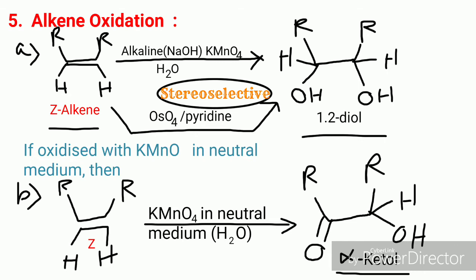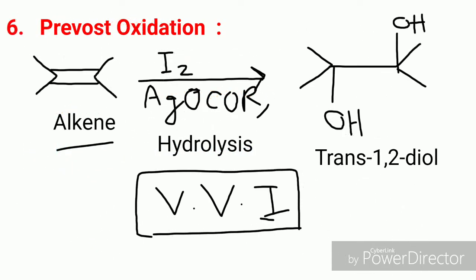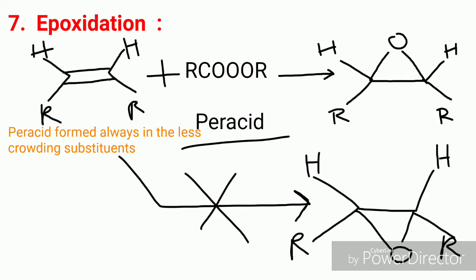Next is Prevost oxidation. Here, alkene is converted to the corresponding trans-1,2-diol. Remember, in the previous case, alkene was converted to cis-1,2-diol by alkaline KMnO₄. Here, alkene is converted to trans-1,2-diol by I₂ and AgOCOR — this is the specific reagent used in Prevost oxidation that you should remember — followed by hydrolysis. This is a very important reaction.